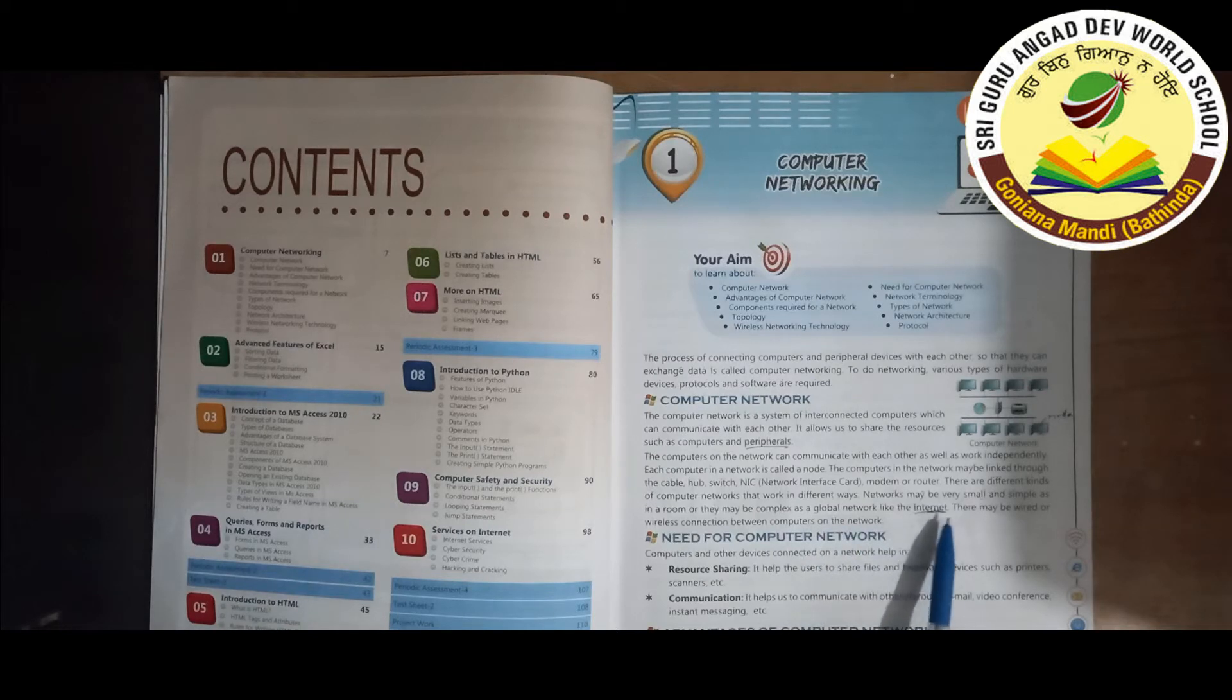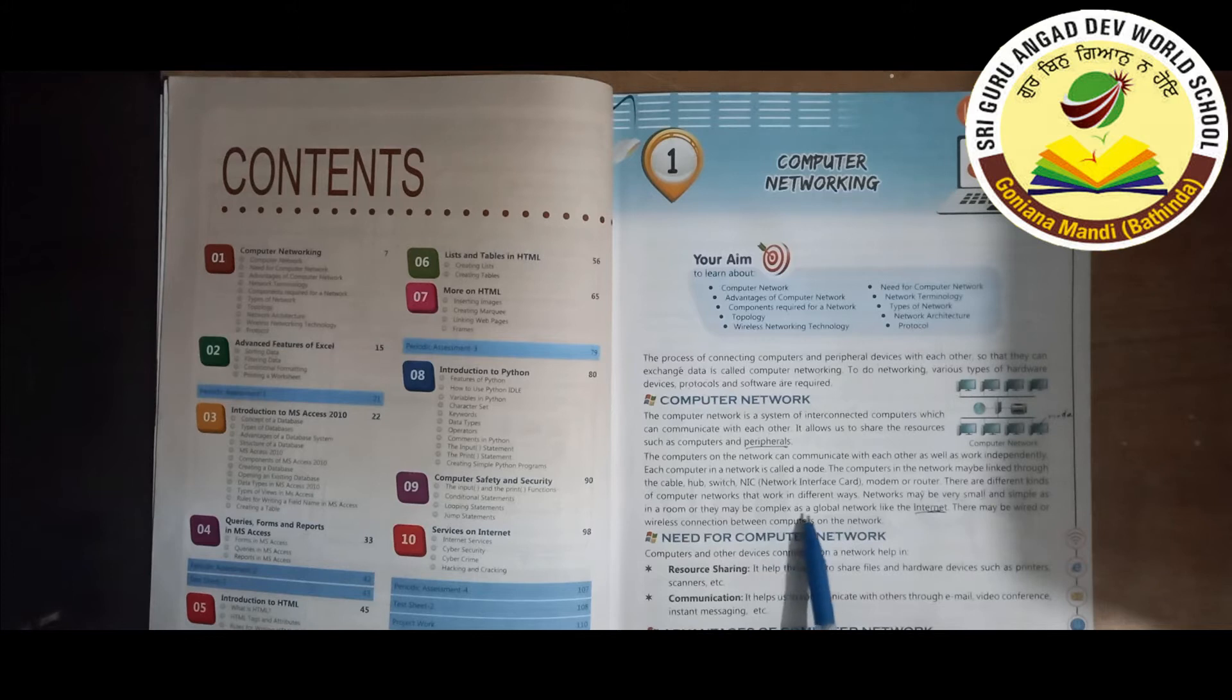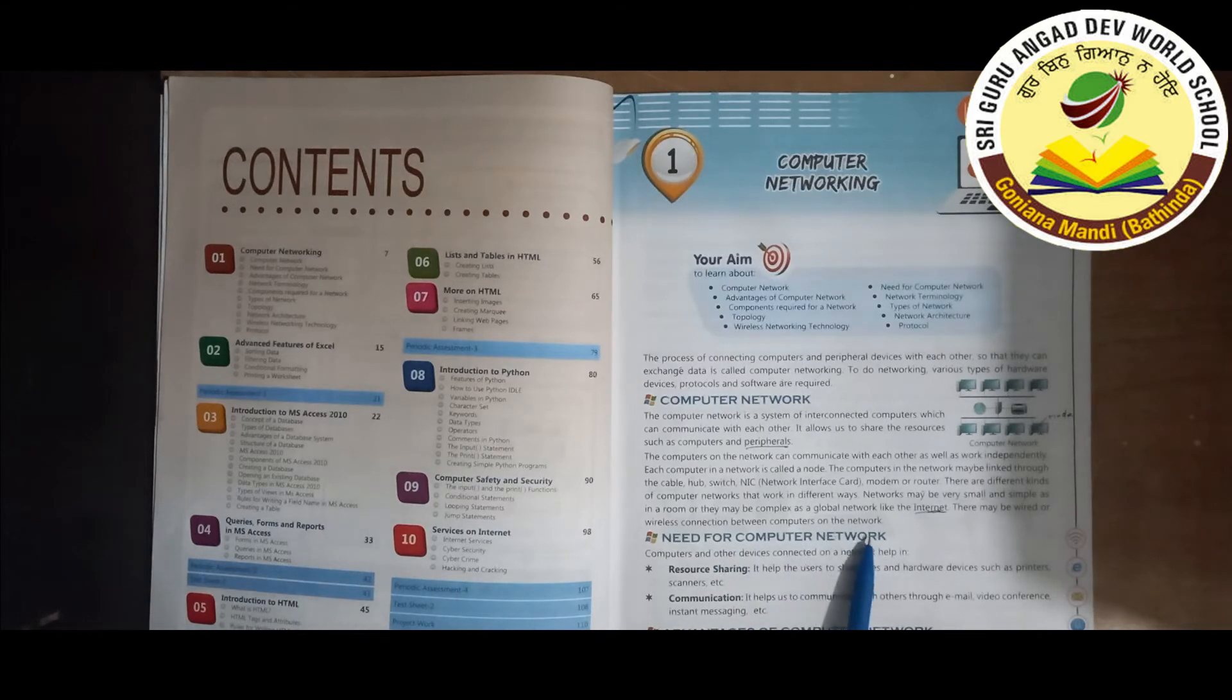Networking can be in one room. If we have a wide area or global networking, then we can go to the Internet through wide area. There may be wired or wireless connection between computers on the network.